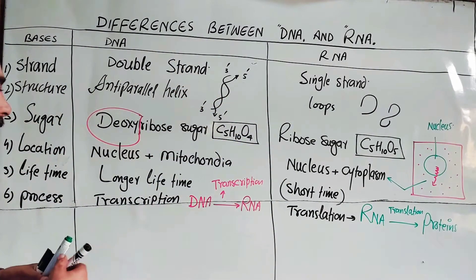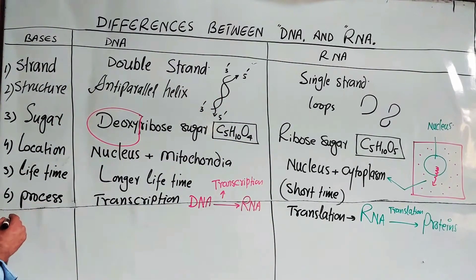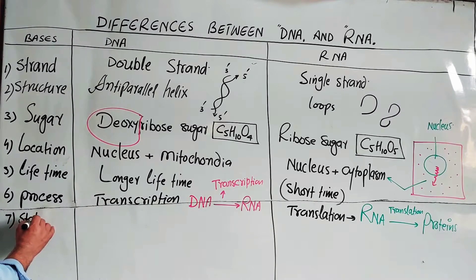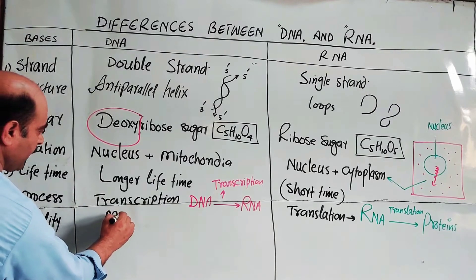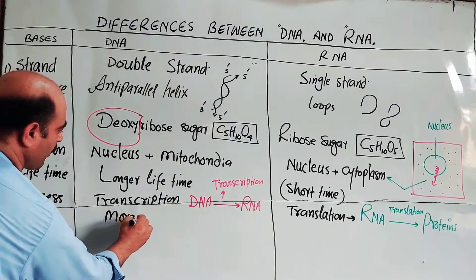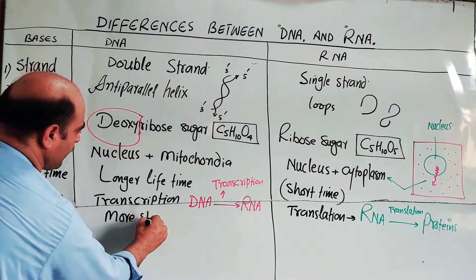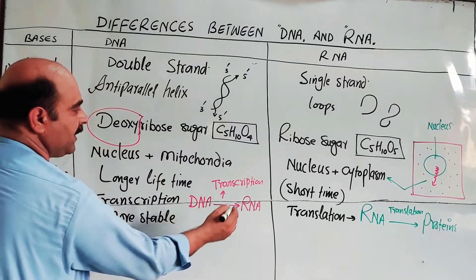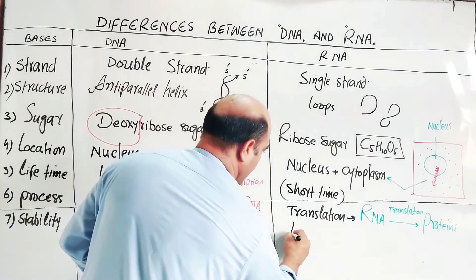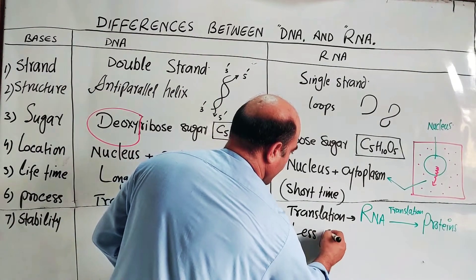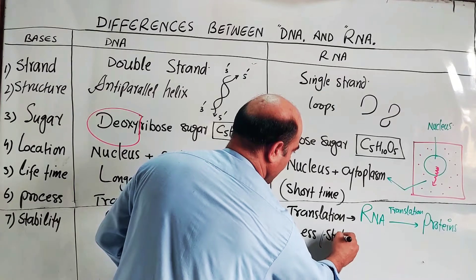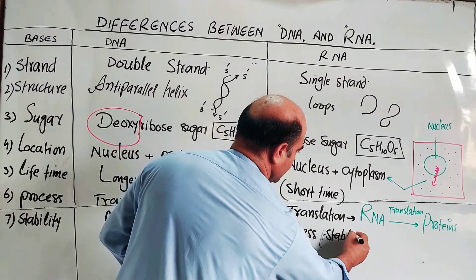The next difference is stability. DNA is more stable, while RNA is less stable. So DNA has greater stability compared to RNA, which has less stability.